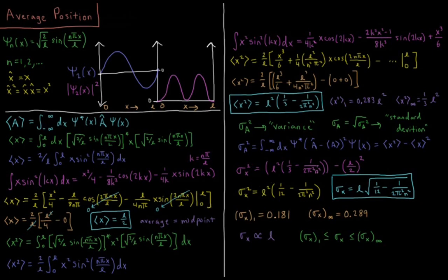That gives us, when we factor things out, l squared, 1 over 12 minus 1 over 2 pi squared n squared. So once I do all the algebra, if I take the square root of this to go from the variance to the standard deviation, which is our real measure for the uncertainty in the x position, square root of this becomes sigma x is l times square root 1 over 12 minus 1 over 2 pi squared n squared.